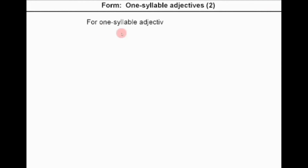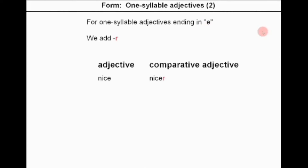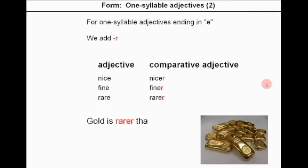For one-syllable adjectives ending in the letter E, we simply add the letter R. For example: nice → nicer, fine → finer, rare → rarer. Example: gold is rarer than silver.